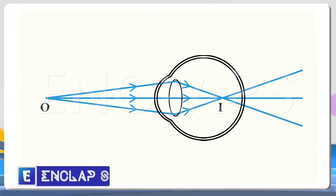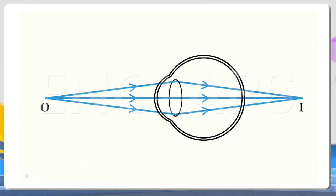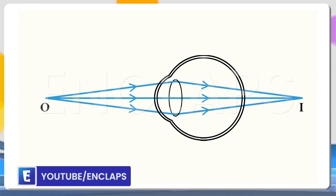So, no clear image is formed here. In the second diagram, O is the object position and I is the image position. Here, the image is formed beyond the retina. Here also, no clear image is formed.